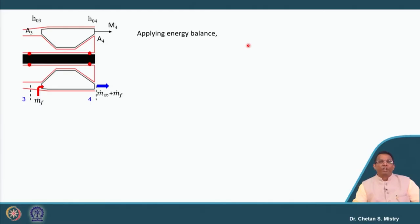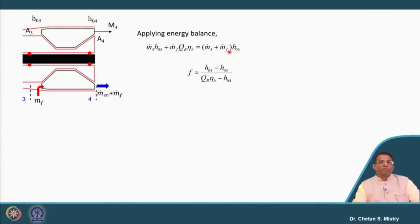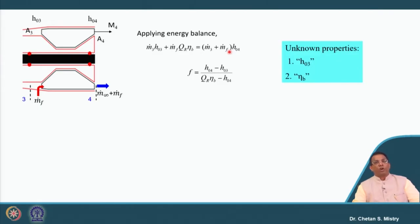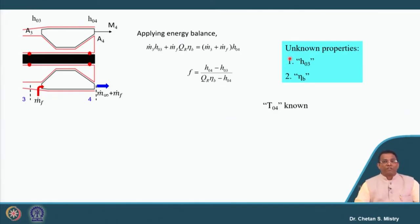Let us understand the energy equation. This energy equation is represented in terms of combustion chamber entry condition: M-dot-3 × h03 + M-dot-F × q × η_b = (M-dot-3 + M-dot-F) × h04. This gives us the fuel-air ratio. The fuel-air ratio is set with the temperature ratio T04/T02. Under this equation we have two unknowns: h03 and the burner efficiency.